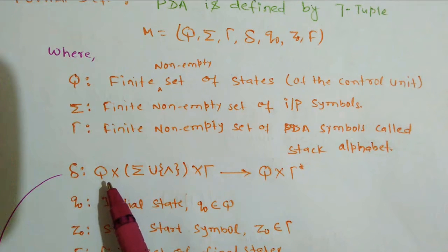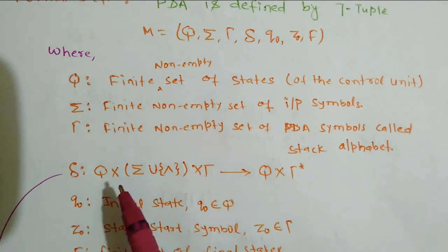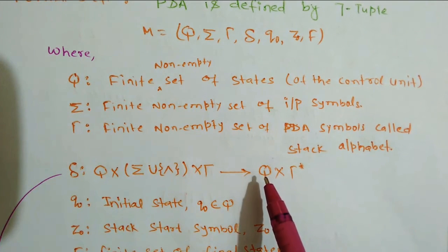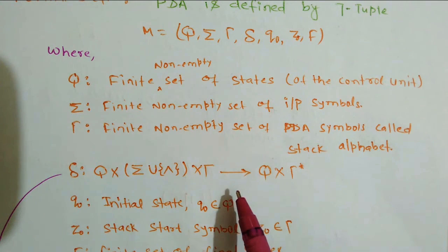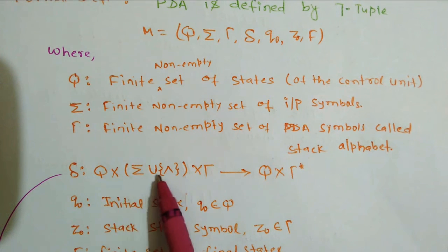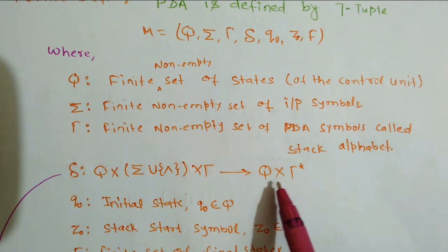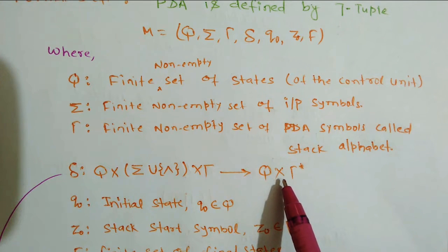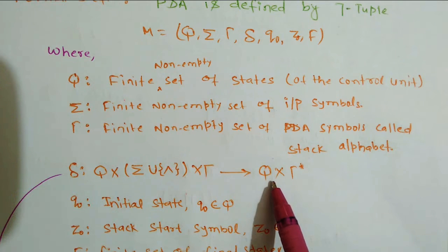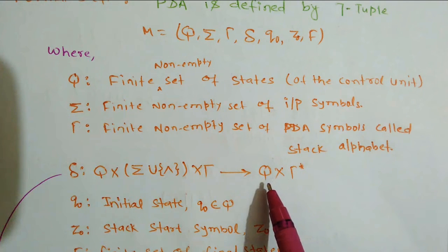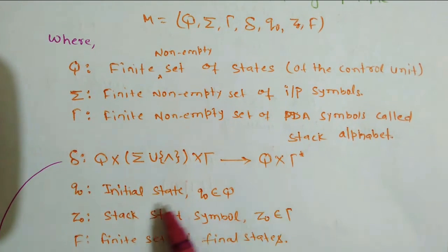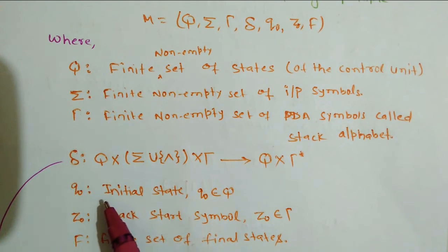The next symbol is the transition function. According to the transition, we can categorize PDA as either deterministic or non-deterministic. If a move goes to a single particular state, it is deterministic pushdown automata. If a move for a particular symbol goes to more than one state, that is non-deterministic pushdown automata. The concept is very similar to deterministic and non-deterministic machines. The next symbol is q-naught, which is the initial state.